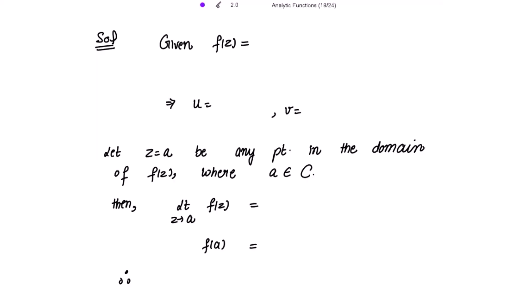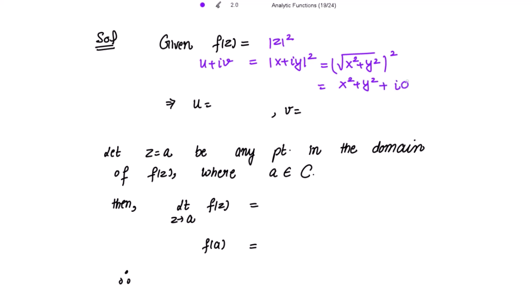What is given to us? f(z) = |z|². Writing f(z) = u + iv, where z = x + iy, we get |z|² = (x² + y²)^(1/2) squared = x² + y². Since there is no imaginary part, we add i·0. Comparing real and imaginary parts: u = x² + y² and v = 0.